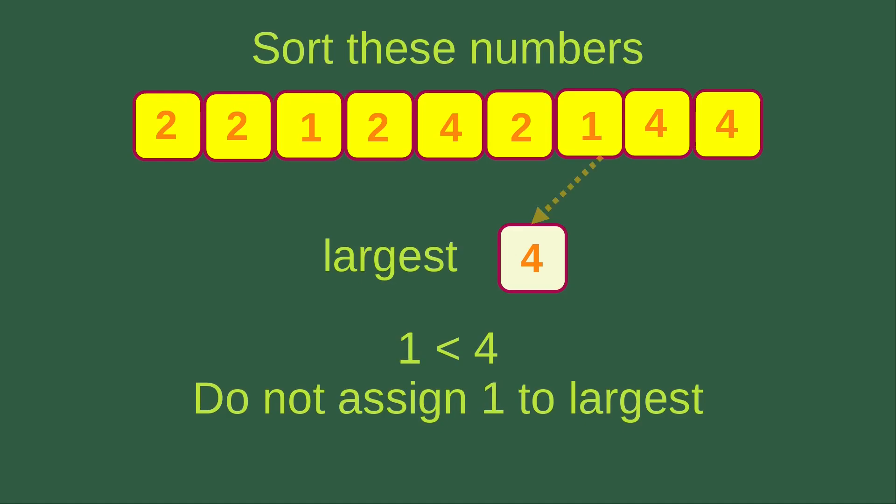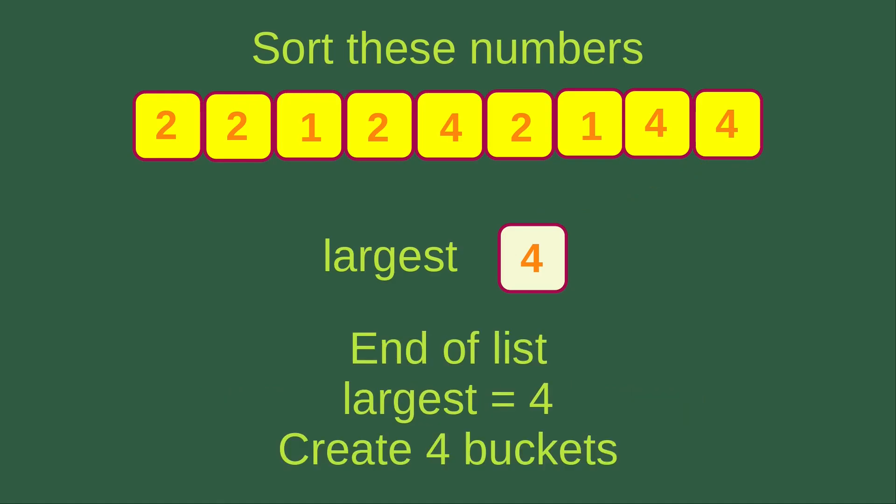Now another number is one. Since one is smaller than four, I don't have to assign it to the largest variable — largest remains at four. Then I check another number, which is four. Four is equal to four in the largest variable, so I don't need to do the assignment. This is the final number to check, which is four again. Four is equal to four, so no assignment needed. The largest variable is four after traversing all the numbers, and we have reached the end of the list.